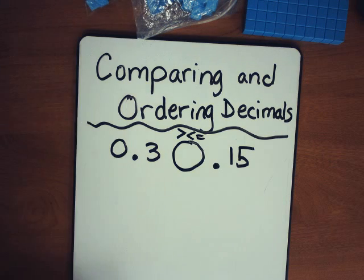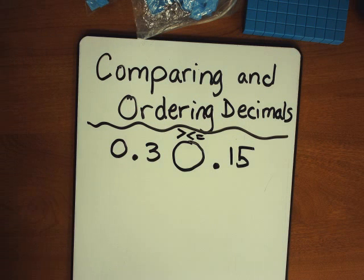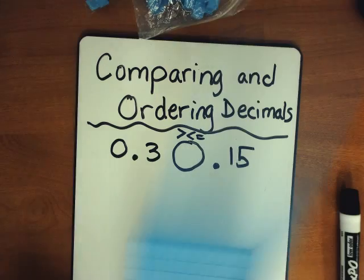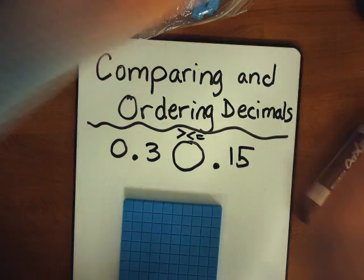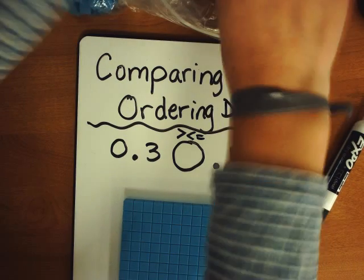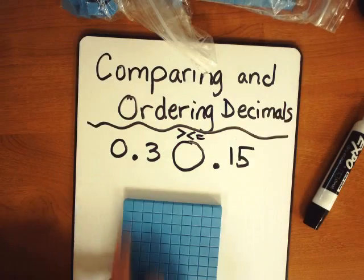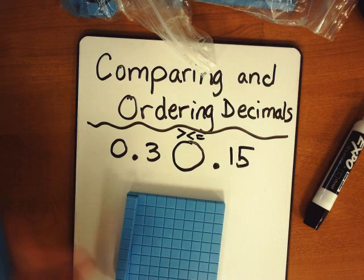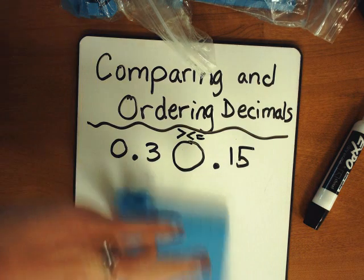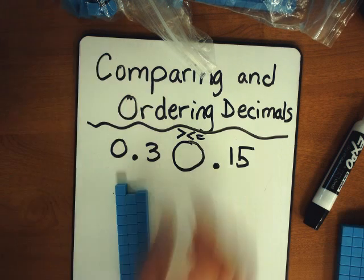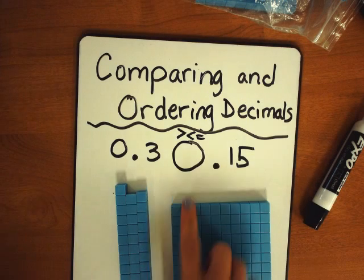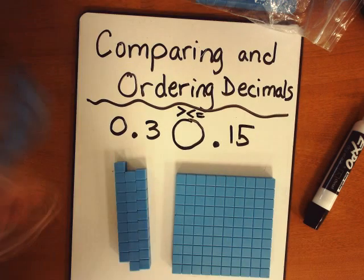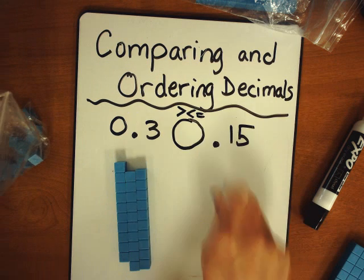Now a lot of kiddos see that there are two digits here and automatically think that that must be larger. So I want to take a look at our one right now. If I have three tenths, that would be three out of ten total. So here's my one where I've got ten rows — three tenths of that would be three longs. And when I have fifteen hundredths, it would be fifteen cubes out of the hundred total right here.